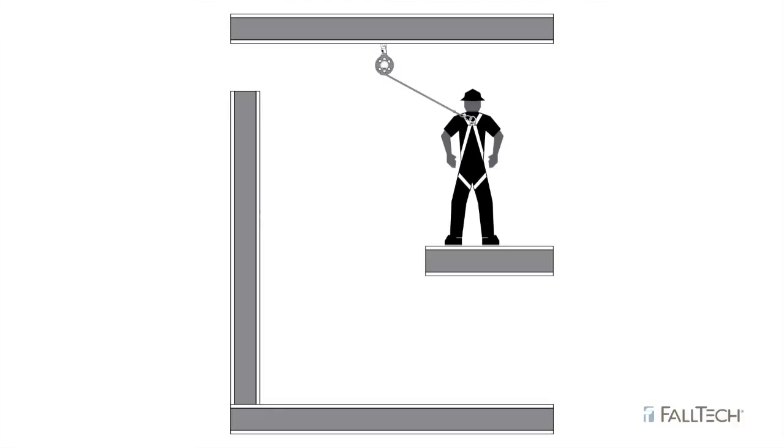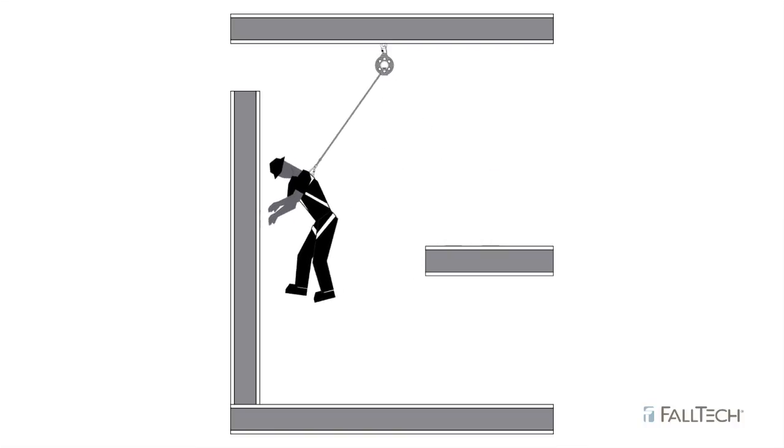Another consideration is swing fall. Swing fall occurs when the worker falls while not being directly beneath the overhead anchor point. This can cause the worker to swing into adjacent obstructions rather than dropping straight down.